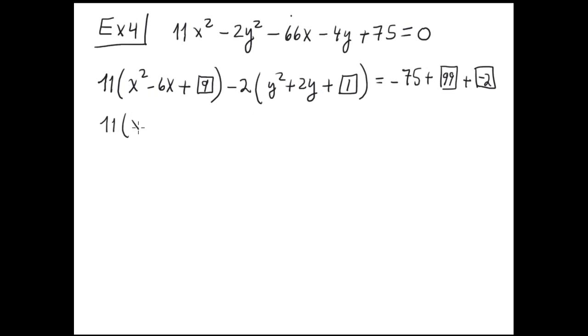The number inside the first box is 9 because 6 divided by 2 is 3 squared is 9. The number inside the second one is 1 because 2 divided by 2 is 1 squared is 1. Because 9 times 11 is 99, and 1 times minus 2 is minus 2. Now factoring: 11 parenthesis X minus 3 squared, minus 2, Y plus 1 squared, equals 75 plus 99 minus 2 is 22.